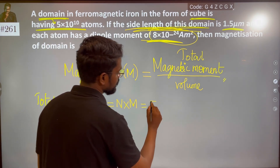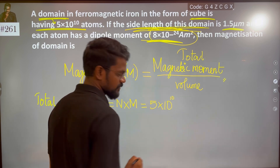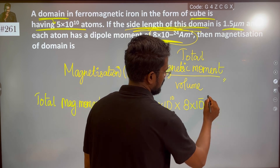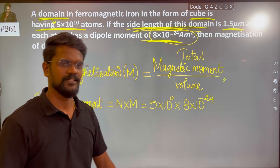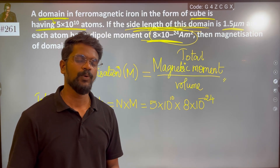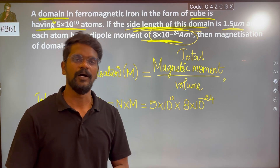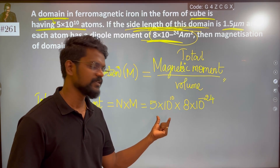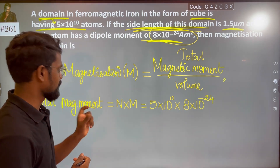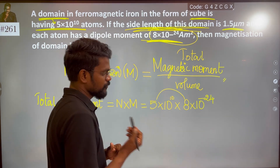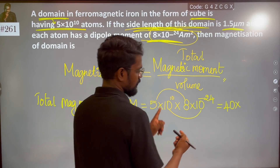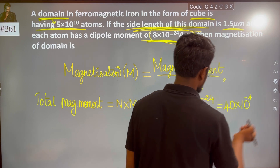Here, n is 5 × 10¹⁰. Here is one atom, and each atom has a magnetic moment of 8 × 10⁻²⁴. For example, there is a box with 100 chocolates: 1 chocolate times 2 equals 200. Total magnetic moment is 8 × 10⁻²⁴ times n, giving 10 to the power minus 14.